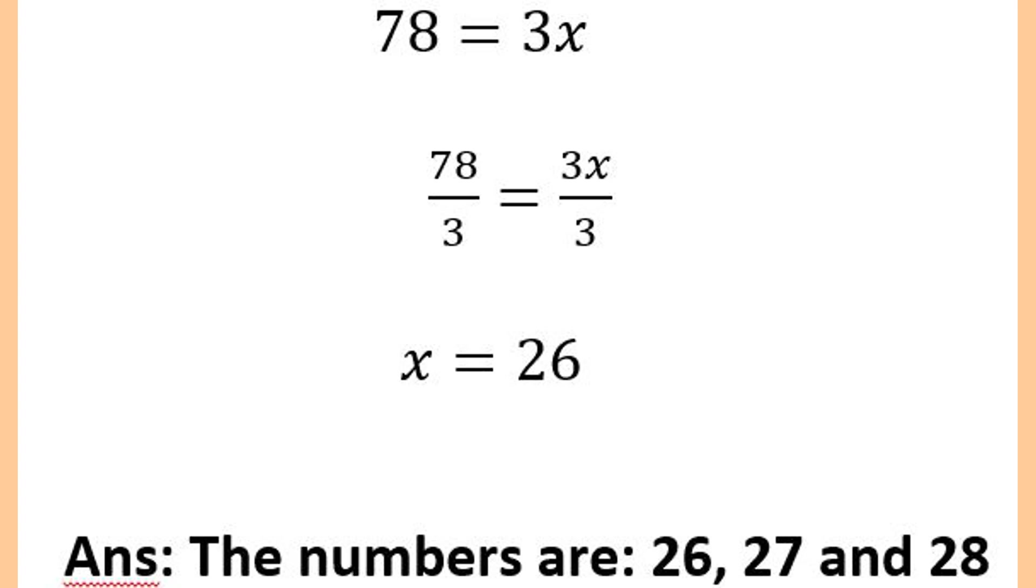The numbers are 26, 27, and 28. These are the three consecutive numbers whose average is 27.